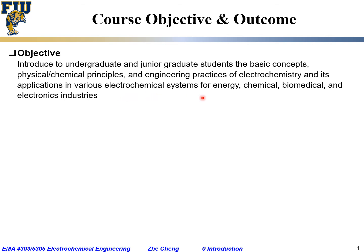For the energy industry, for example, we can use fuel cells to generate electricity. For chemical or material manufacturing, we have the production of hydrogen, chlorine, and metallic aluminum — all of these rely on electrolytic processes related to electrochemistry. For biomedical applications, the glucose monitor measures the concentration of blood sugar in a small drop of blood based on electrochemistry.